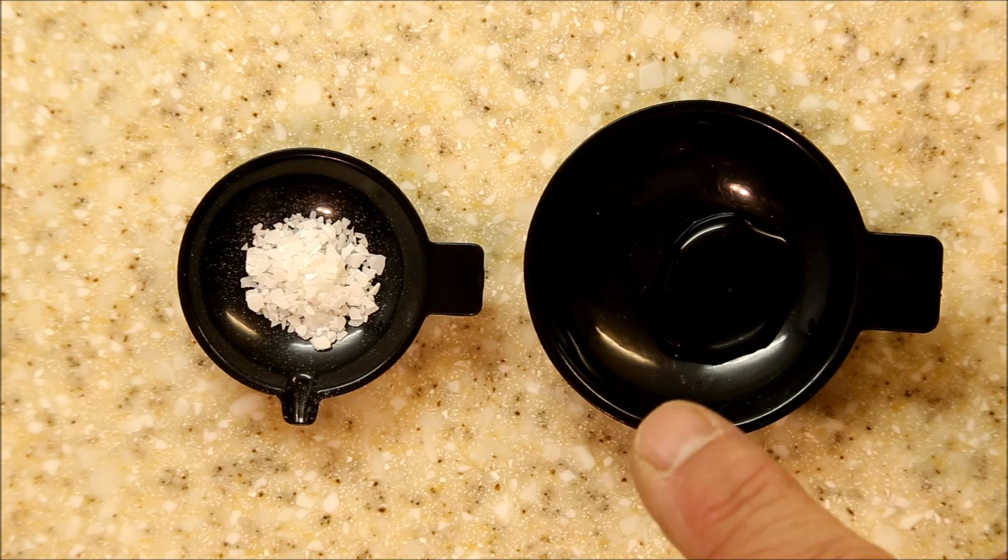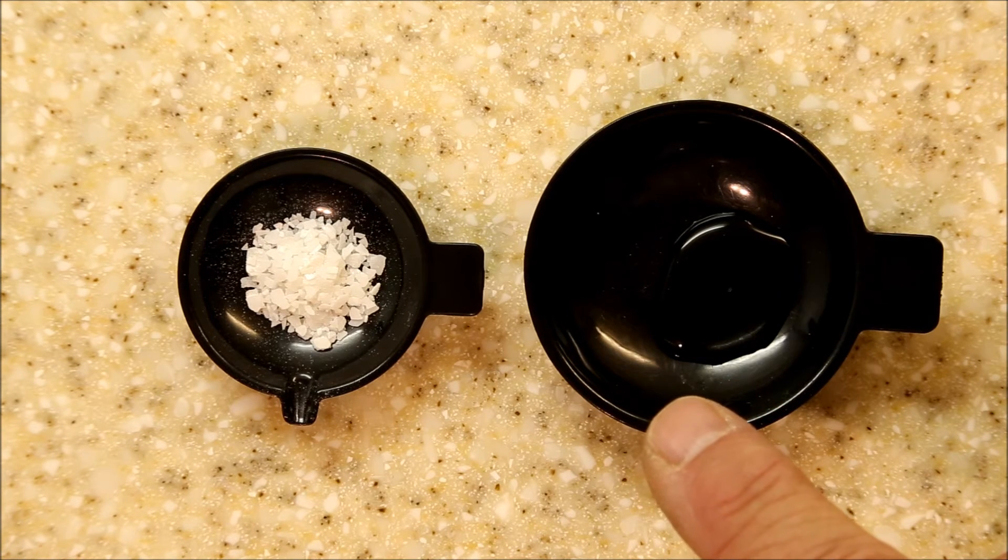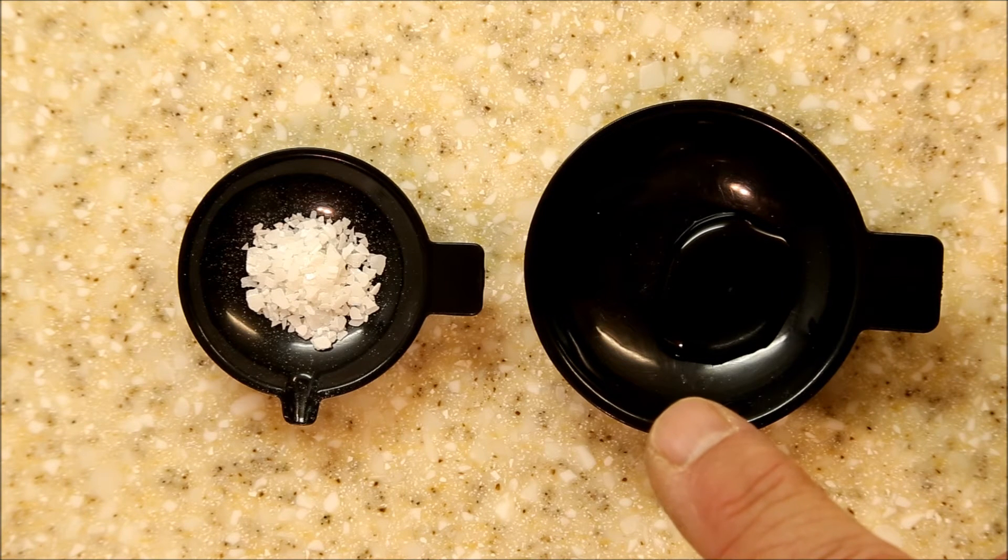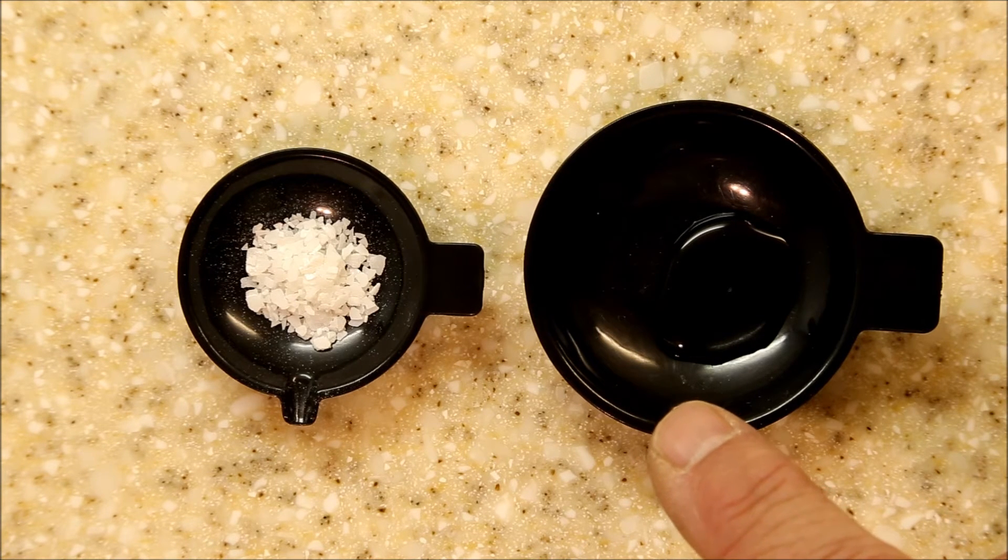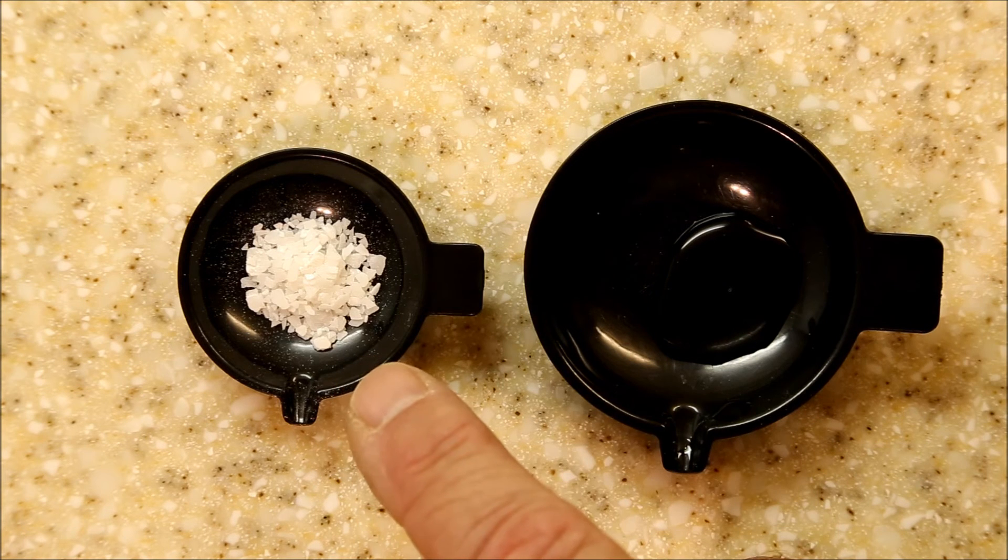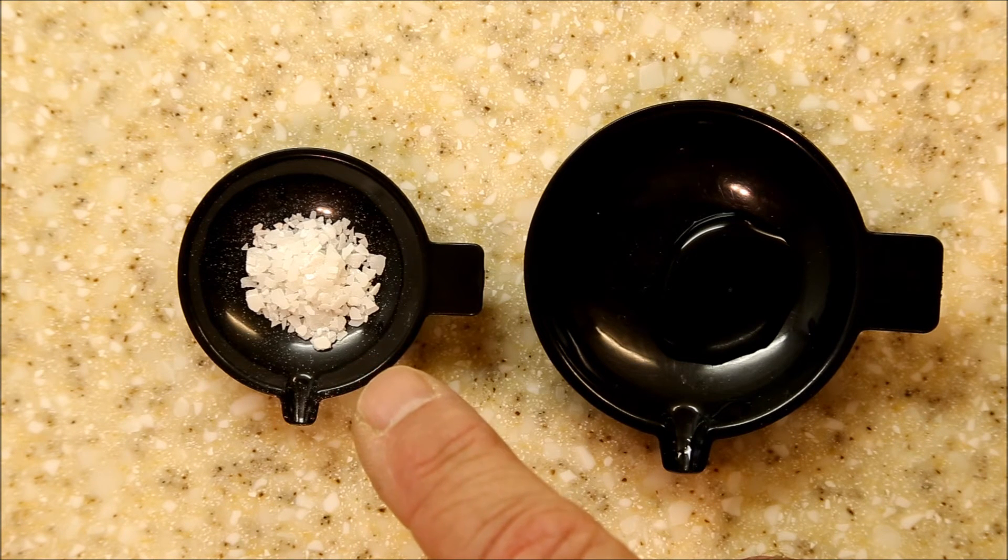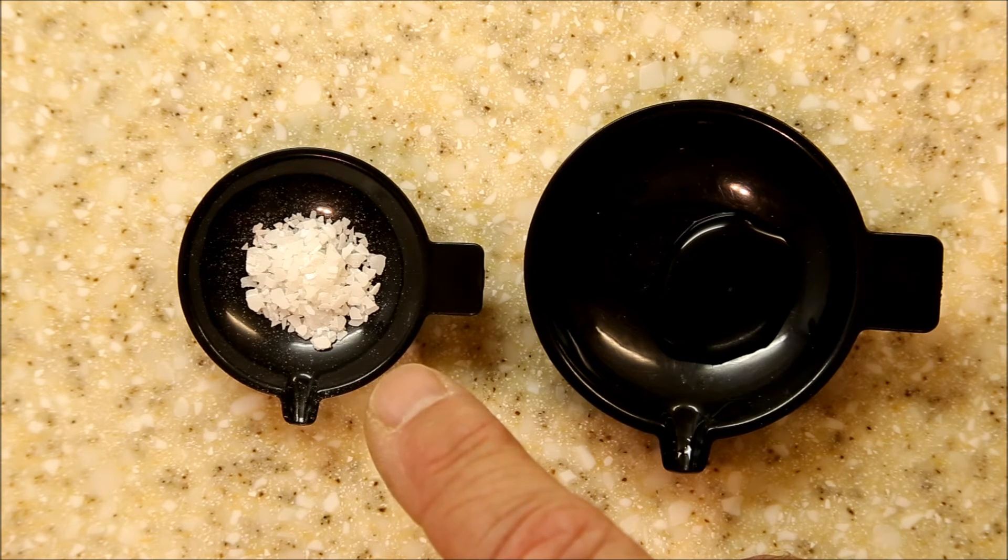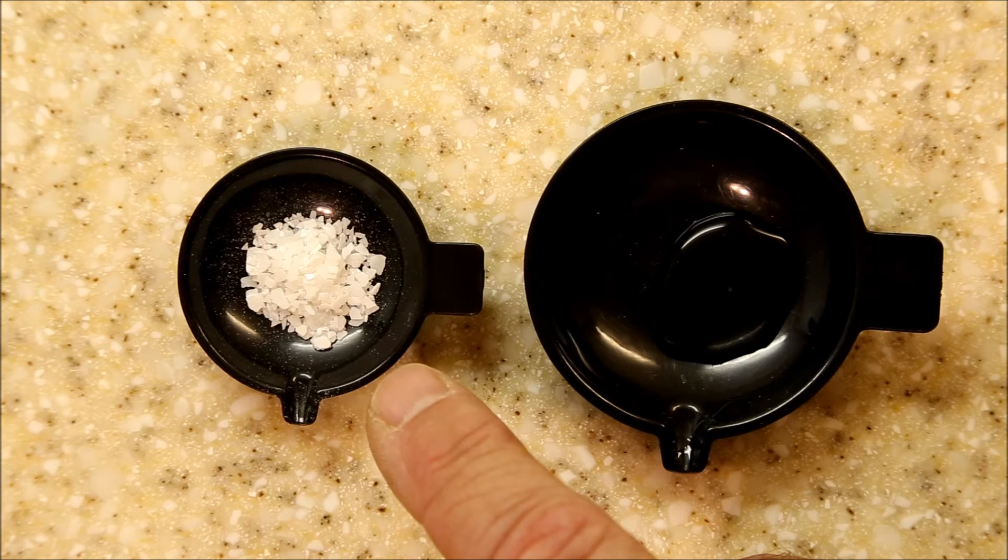The stannous chloride doesn't dissolve in the water real easily, so you'll want to add both in a glass container and then use a glass swizzle stick or something non-reactive to help pulverize the stannous chloride into a fine powder and mix it in and get it dissolved into the water.